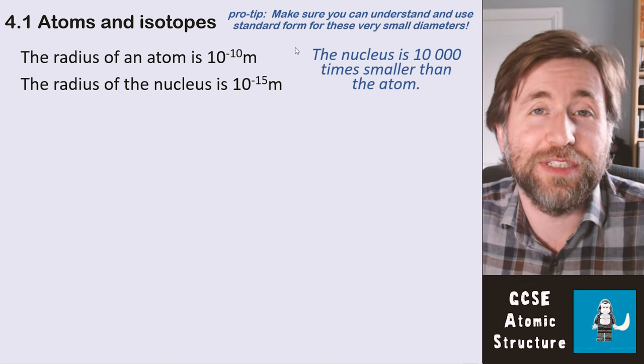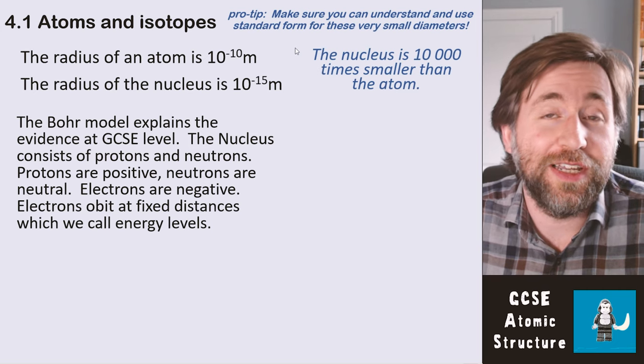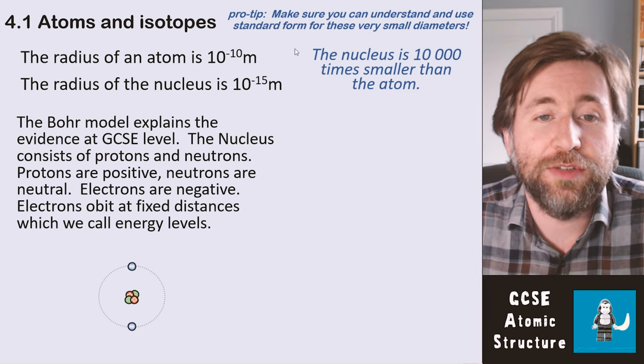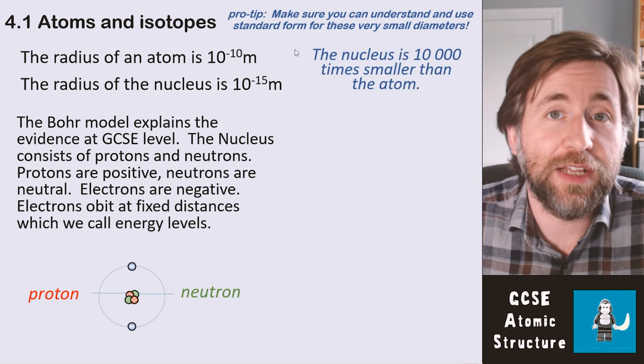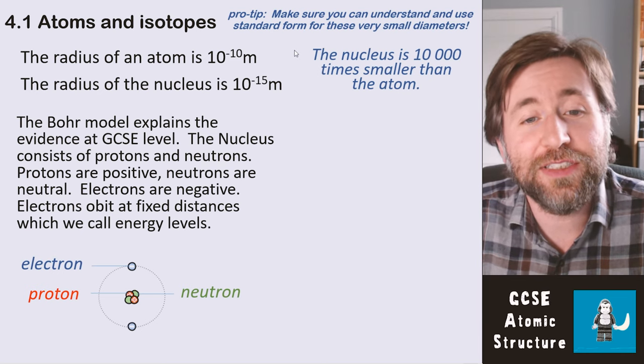These are very small values expressed in what we call standard form. The Bohr model is the model that we actually use and it fits all the evidence that we have at GCSE. The nucleus consists of protons and neutrons. Protons are positive and neutrons are neutral.